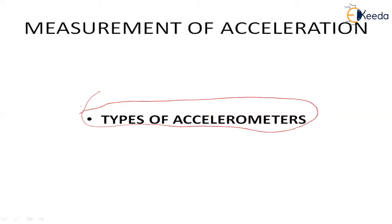Generally accelerometers are classified based upon the type of the spring element and the form of the damping used. On the basis of the damper and the spring, accelerometers have been classified into three types: one is called the potentiometric accelerometer, the second is called the LVDT type accelerometer, and the third is the piezoelectric type accelerometer. In this session we are going to discuss each one in a detailed manner.